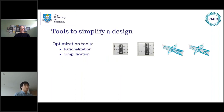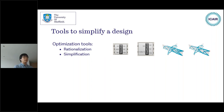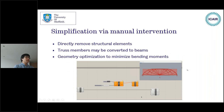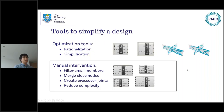In Peregrine we provide a wide range of tools to simplify the design. Last week we introduced two optimization tools including rationalization and simplification to generate simplified designs. However, in some cases we want more manual control. We actually have another four components: the filter, merge, encrossover, and complexity components. They provide manual intervention tools to further simplify structures with more control.